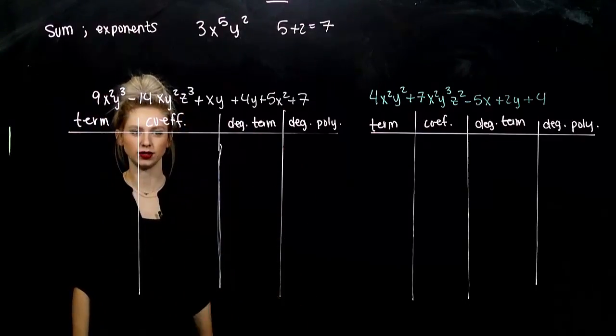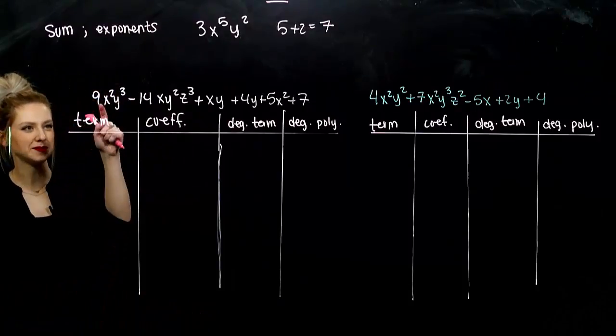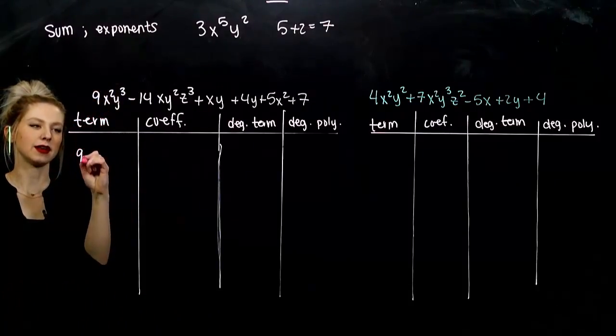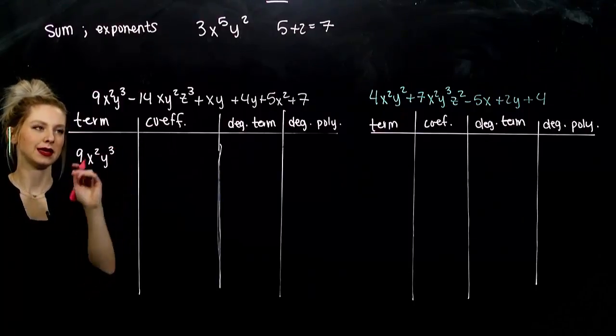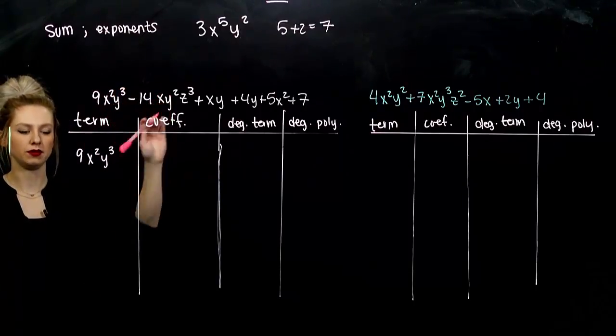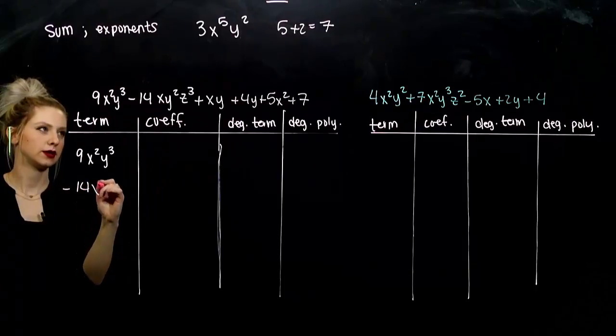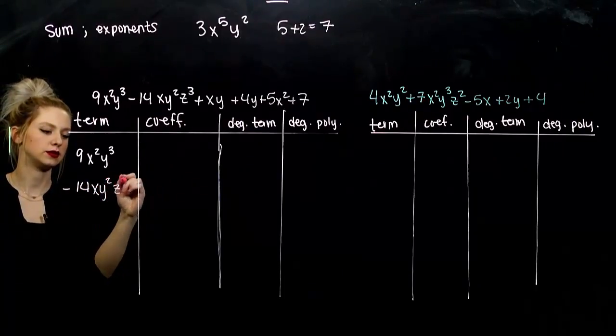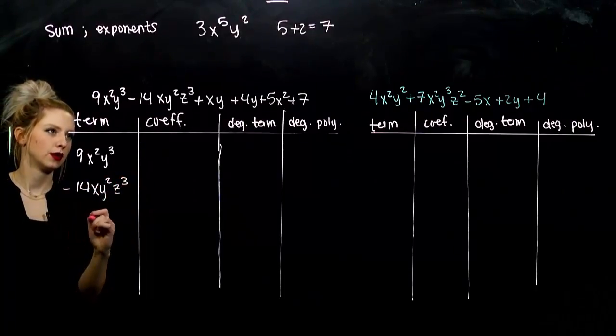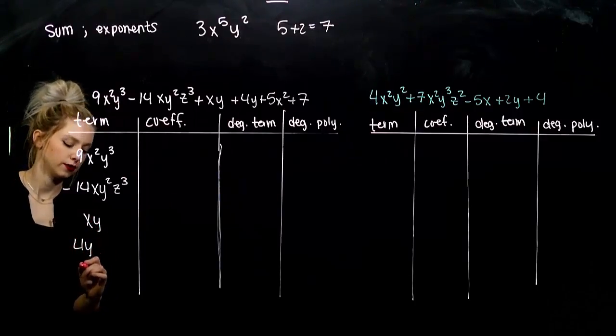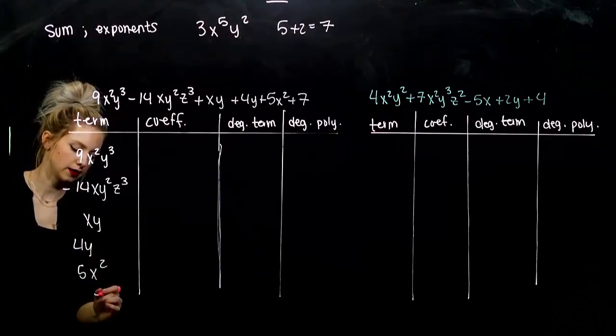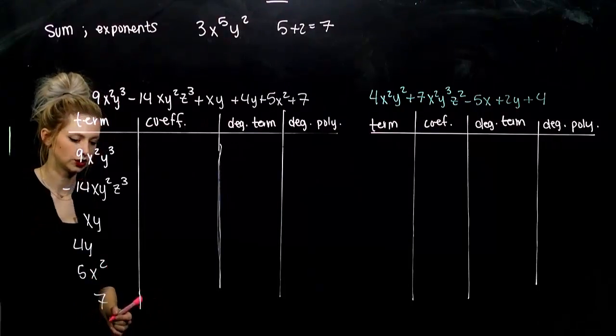So what is my first term here? I've got 9x squared y cubed. Second term, again, the sign goes with it. So negative 14xy²z³. Third term is xy, fourth, 4y, 5x squared, and 7 is the last one. So many.